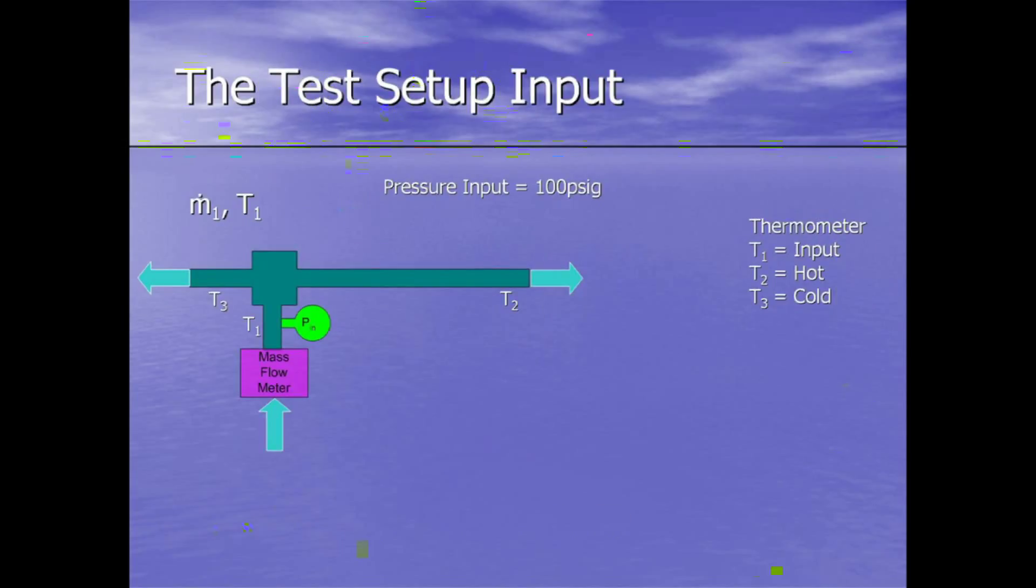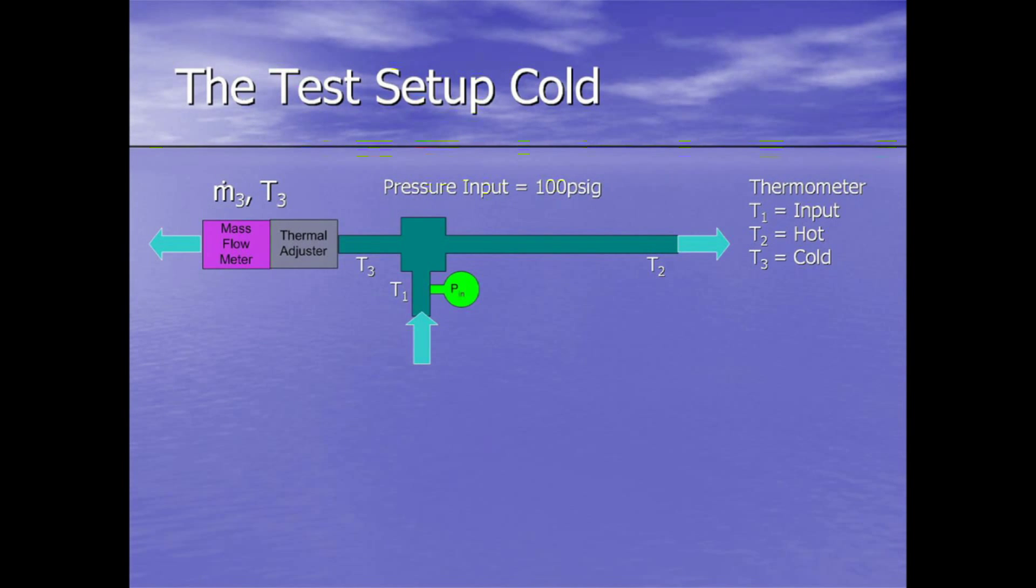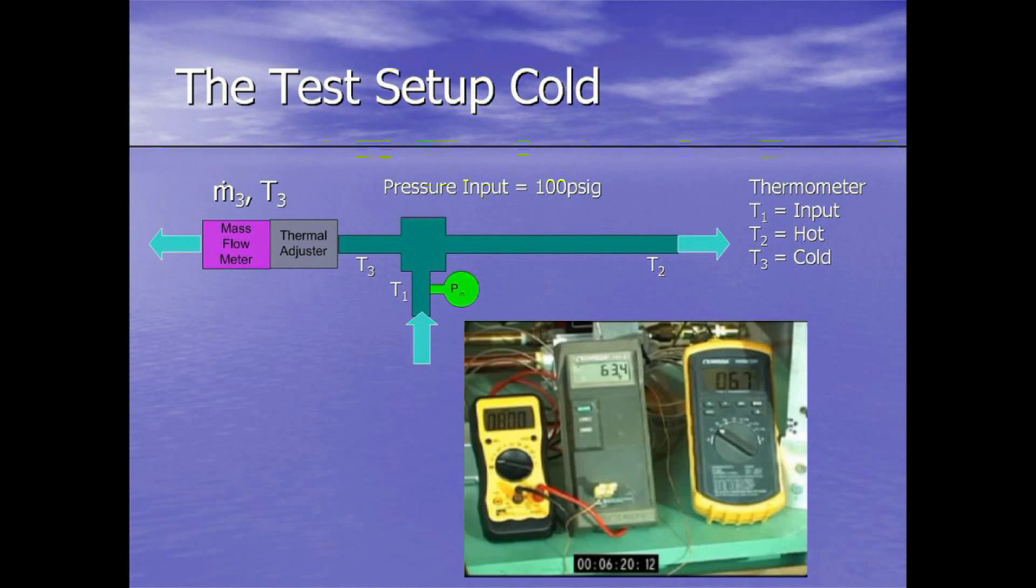The next three slides show the test setups for the input and the hot side and the cold side, and it shows that I've moved the mass flow meter around. The only critical input is the input pressure is 100 psi, and then the vortex allowed to reach stabilization wherever it decides to go. I had one limitation on my compressor. I had to bring it up to 120 psi, and we ran it until the compressor dropped to 105 psi. It couldn't quite keep up with the vortex tube.